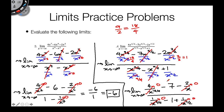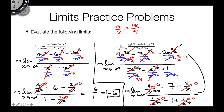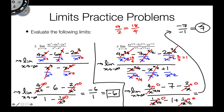Now evaluating the limit — all terms with x in the denominator go to 0, leaving minus 7 over minus 1. The negative signs cancel, so our final answer is positive 7.